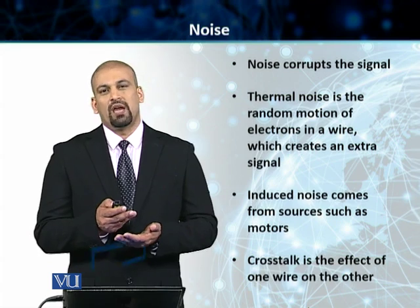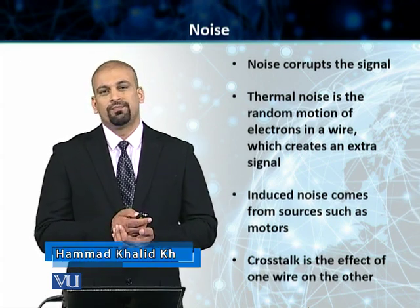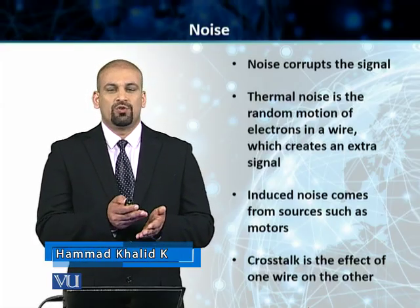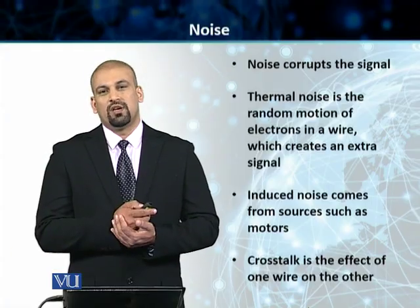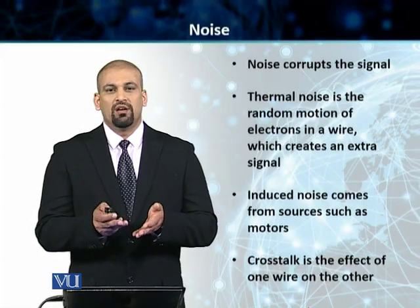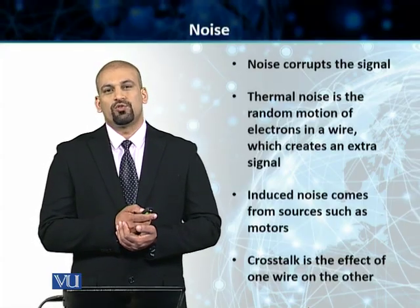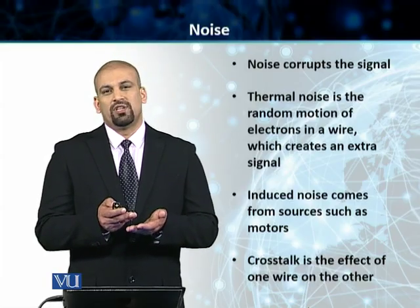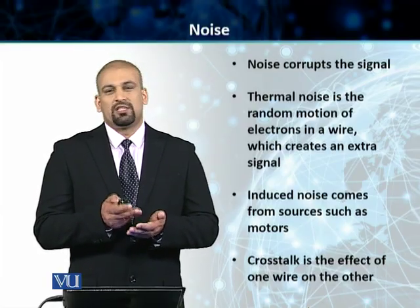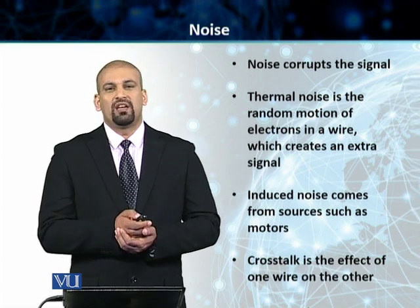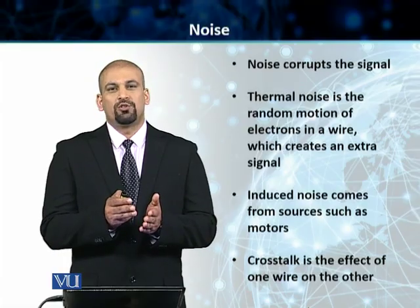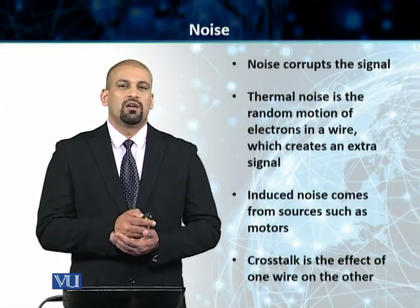Thermal noise, for example, can be due to the motion of electrons in the transmission medium. Induced noise can occur if your transmission medium is close to things like motors — that creates the noise. Then you've got crosstalk: if there are two wires close together, that creates noise called crosstalk. Impulse noise is another form, which happens when a voltage spike is created due to lightning or any other catastrophic reason. So noise is our third source of transmission impairment, which disturbs our signal.